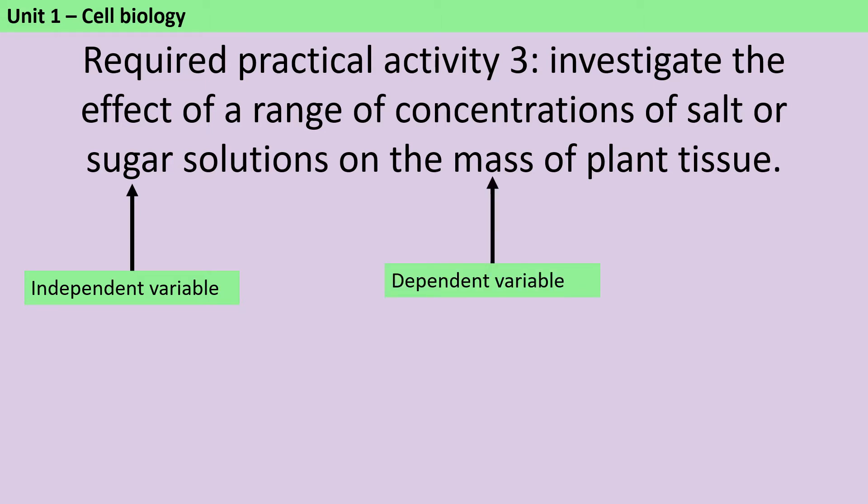Then the control variables are the things that need to be identical between the different repeats, and this is because otherwise I won't have valid data. If I change more than one thing at once, I won't know what has triggered the effect that I see.